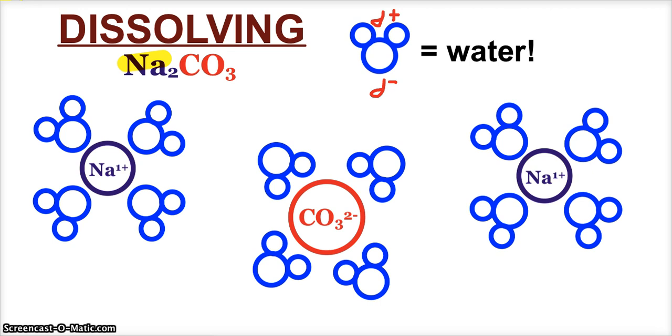We have the ears of Mickey Mouse, the partial positive hydrogens, surrounding the negative carbonate ions. And that's what happens during this hydrolysis process. The water molecules surround the ions.